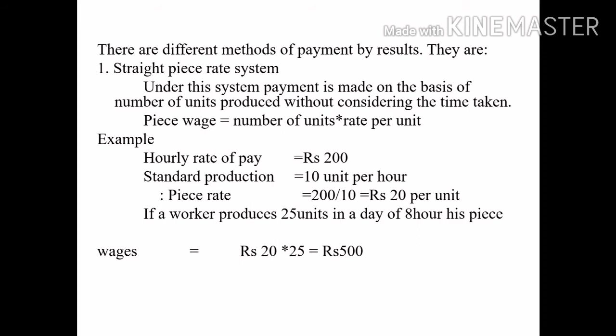The equation for calculating wages under straight piece rate system: Piece wages = number of units × rate per unit. For example, hourly rate of pay is Rs. 200, and one unit equals Rs. 20 per unit. If a worker produces 25 units in a day of 8 hours, his wages are Rs. 20 × 25 = Rs. 500.